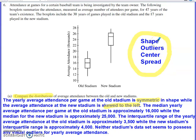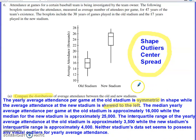So we've hit on the shape of both box plots. For outliers, there are no obvious data points that are separated from the tails of these box plots, so neither stadium's data set seems to possess any visual outliers. For center, with box plots it's easy to go with median. The median for the old stadium is approximately 16,000, and then the median for the new stadium is significantly higher, somewhere up near 25,000.